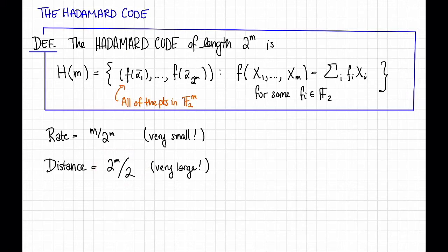Okay, so that's the Hadamard code. Bad rate, good distance. The reason we're talking about it now is because it also happens to be an LCC, that is a locally correctable code with query complexity just 2. Let's see why.